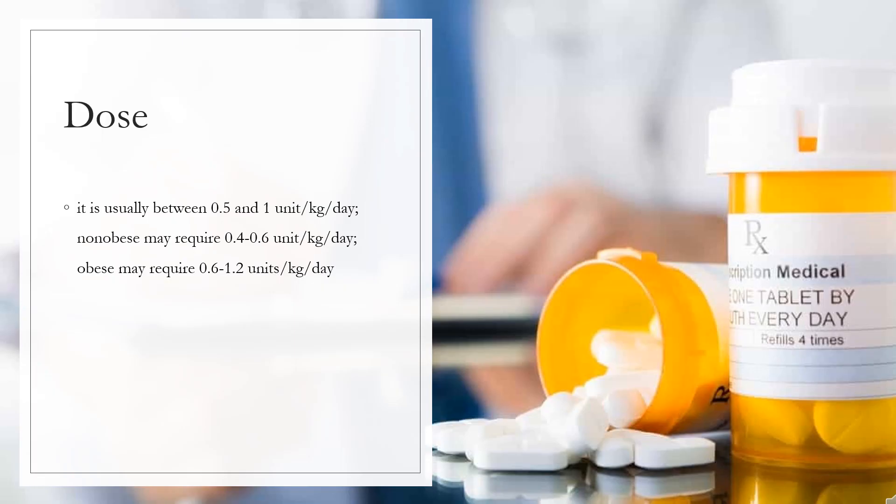Dose Type 1 diabetes mellitus: Improvement of glycemic control in adults and children with diabetes mellitus. May administer 0.2-0.6 unit/kg/day in divided doses. Conservative doses of 0.2-0.4 unit/kg/day often recommended to reduce risk of hypoglycemia.